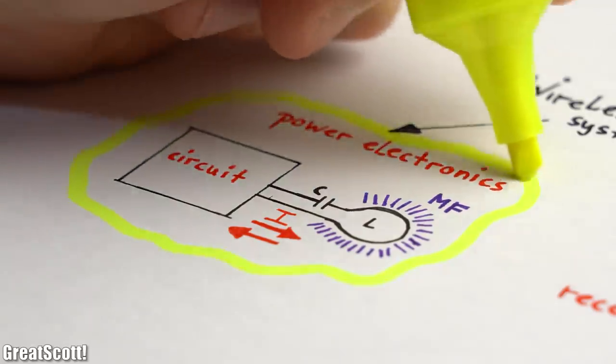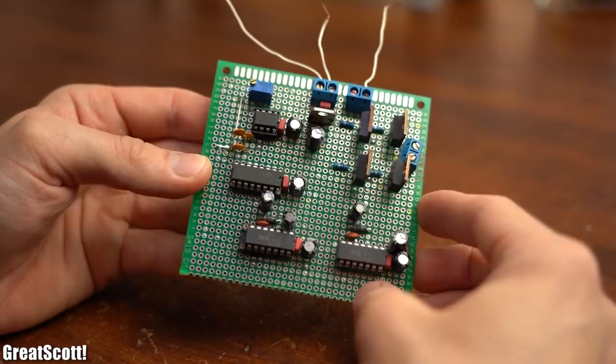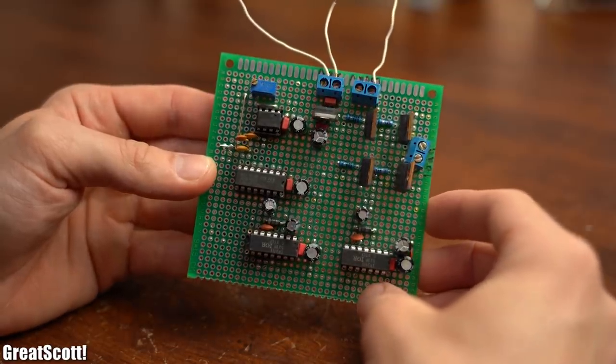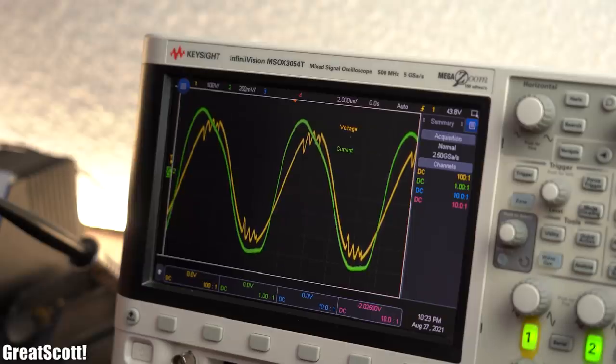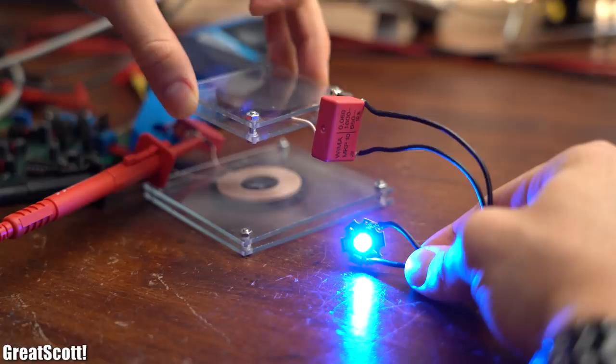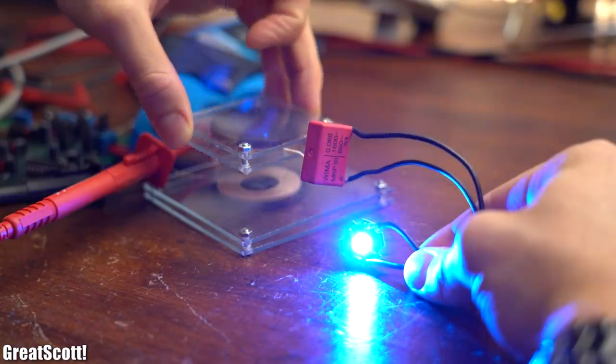So let's firstly focus on the power electronics part, for which I previously built this full bridge inverter, which as you can see can already create a sinusoidal current and voltage through the primary coil resonant circuit. So everything is perfect, right?